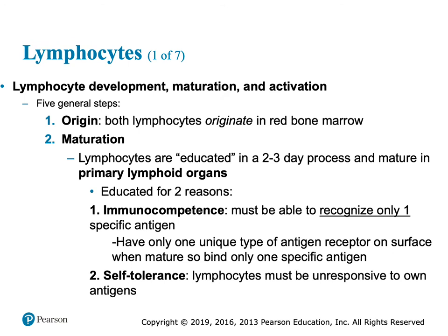Lymphocytes have to learn how to do their job. First they're created — all of our formed elements in the blood are made in the red bone marrow: red cells, white cells, platelets. Lymphocytes are white cells, that's where they were made. Then they have to mature in their primary lymph organ. B cells mature in the bone marrow, but T cells go to mature in the thymus.